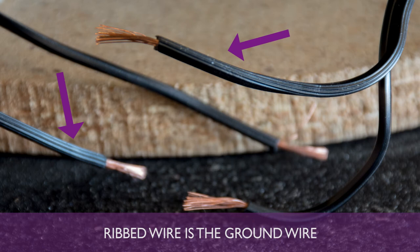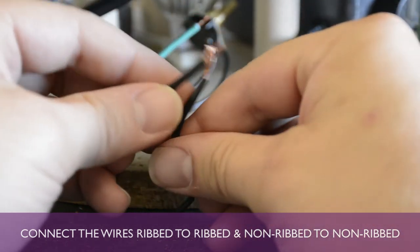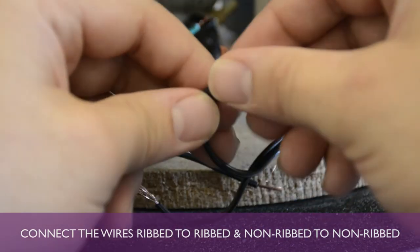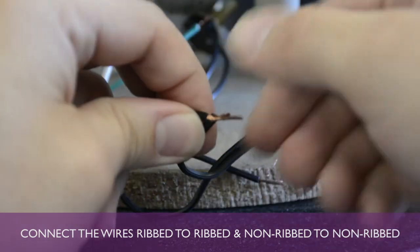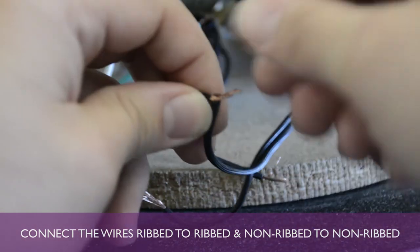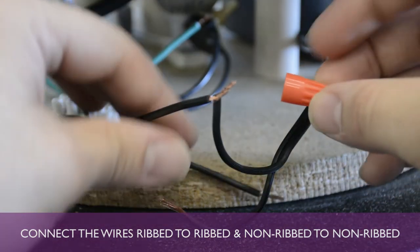One of the cords will be ribbed. This is considered the white wire or the ground wire. Align the ribbed cords to each other and non-ribbed cords to each other. This will ensure your display stays grounded. Twist the wires of the new pump and the previous cord together and secure with wire nuts.